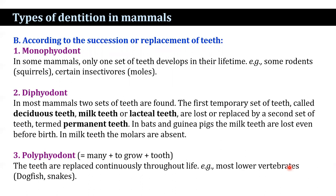In diphyodonts, mammals have two sets of teeth. The first temporary set is known as milk teeth, or lacteal teeth, or deciduous teeth. These are lost and replaced by a second set known as permanent teeth. In bats and guinea pigs, the milk teeth are lost even before birth. In milk teeth, the molars are absent. In polyphyodonts, the teeth are replaced continuously throughout life; this is found in most lower vertebrates such as dogfish, and also in some snakes.